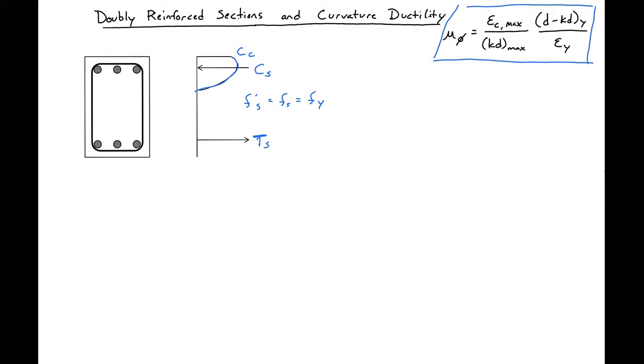So as before, our first step is to use equilibrium. So we'll set tension equal to compression. In this case, our tension is our bottom steel AS FY,